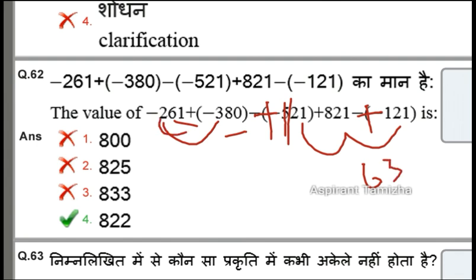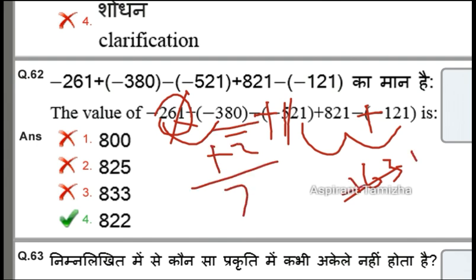Here is 61, that means minus 2. Sorry, here is plus 63 plus 2, so minus 8 plus 2 is 78. Here is 800 plus 900 plus 900 plus 78, which is 822.